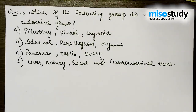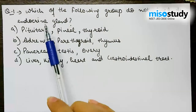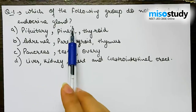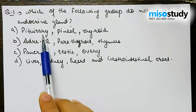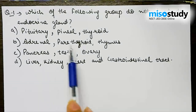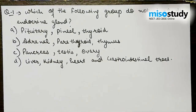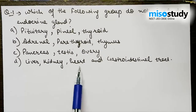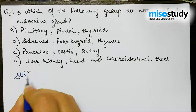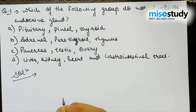The first question from Chemical Coordination and Integration: which of the following groups does NOT include endocrine glands? Option A: pituitary, pineal and thyroid. Option B: thymus, adrenal, parathyroid. Option C: pancreas, testes and ovary. Option D: liver, kidney, heart and gastrointestinal tracts.